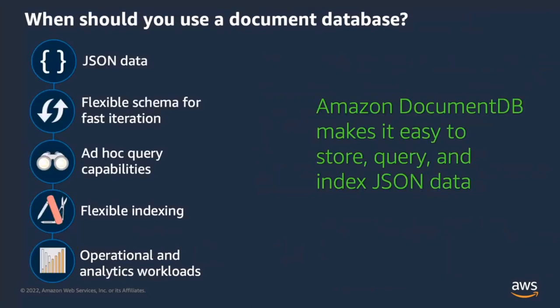Before I talk about the architecture and capabilities, let's understand the application of a document database. Document databases are a great fit when the data is modeled as JSON. JSON allows you to store data flexibly so you can make changes quickly, which is very important in modern applications where rapid innovation is critical. DocumentDB allows you to query the data with very flexible indexing options to boost performance. You can use document databases for running operational workloads and also perform near real-time analytics. Amazon DocumentDB makes it easier to store, query, and index JSON data.